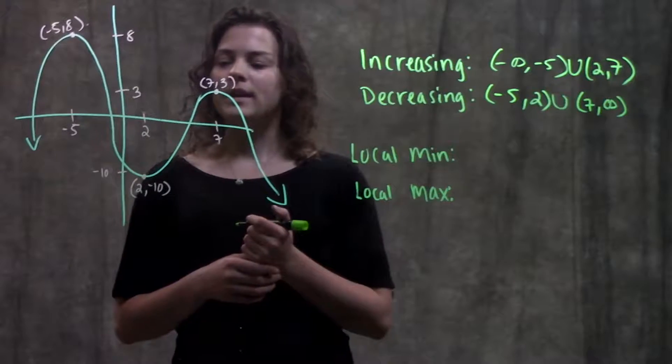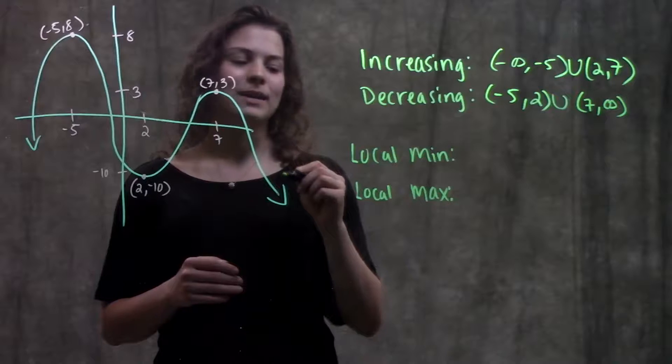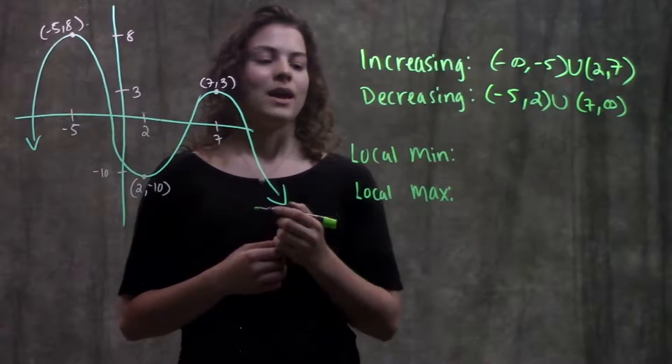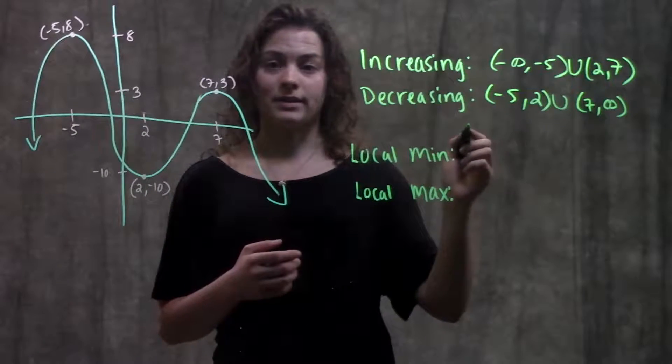To find our local minimum and maximum, that's just wherever we have a top of a hill or the bottom of a valley. That'll be our local max and our local min. Also, you can think about it as wherever the function goes from increasing to decreasing or vice versa.